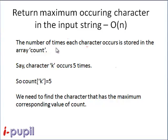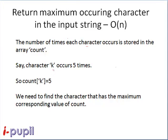The number of times each character occurs is stored in the array count. Say the character k occurs 5 times, so the count of k is 5. That means the character k has occurred 5 times.